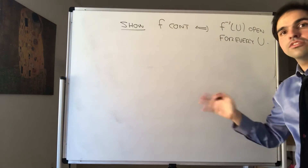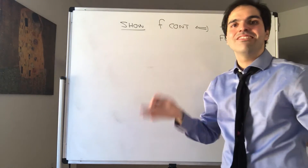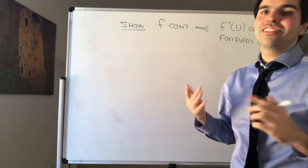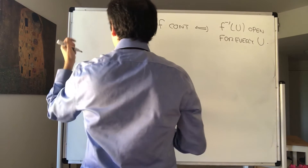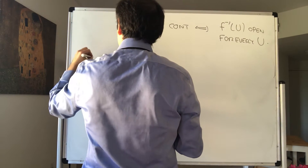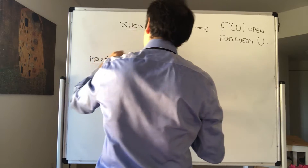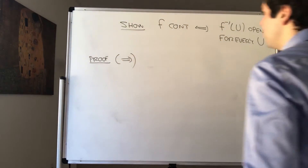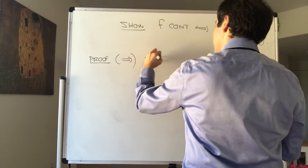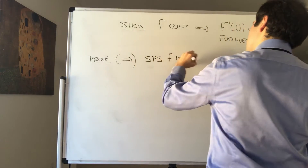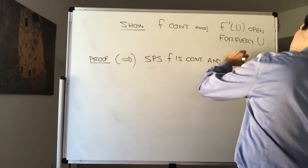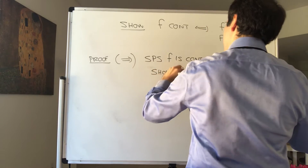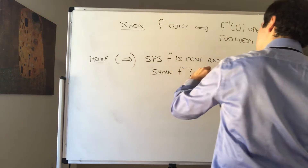Continuous here means: for every epsilon there is a delta such that if x is close enough to x₀, then f of x is close enough to f of x₀. Proof — first direction: suppose f is continuous and u is open, then show f inverse of u is open. To show a set is open, for every x₀ in that set we need to find some ball contained in that set.